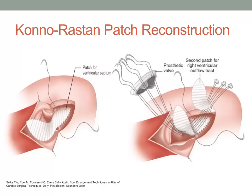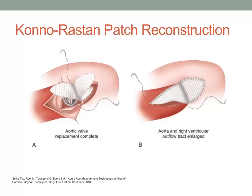Subsequently, the sutures are passed through the sewing ring of the prosthetic valve with the remainder of the valve sutures placed through the annulus in standard fashion, followed by placement into the sewing ring of the prosthesis. The right ventricular outflow tract patch is now folded over the free wall of the right ventricle and a continuous suture is employed to attach the patch to the ventricular epicardial muscle. The left ventricular outflow tract patch is tailored close to the defect and may be fashioned to also incorporate closure of the aortotomy.